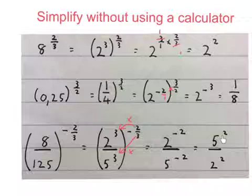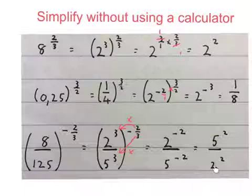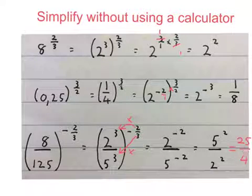If you want you can go one step further and times this out you get 25 over 4.